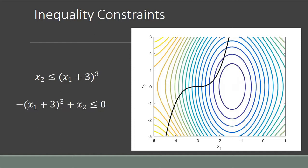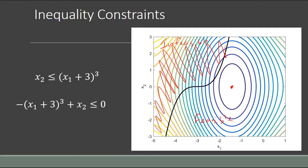We can also flip this constraint and make it so that x2 has to be less than or equal to that quantity, which means we're now ruling out the other space. Fortunately for us, the stationary point where the gradient of the objective function is zero stays in the feasible space, so we're going to get the solution right in the middle just as in the unconstrained case — giving us that better objective function value because this nonlinear inequality constraint is not active. Equality constraints are by definition always active, whereas inequality constraints can be classified as inactive or active.